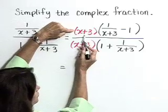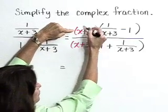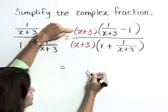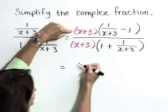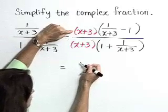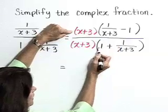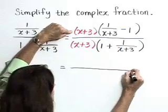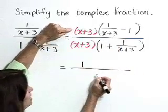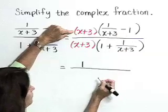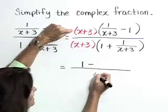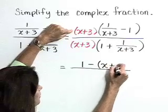Looking at the numerator, we're going to distribute this factor of x plus 3 to both terms. I'm going to do that multiplication all in one step. x plus 3 times 1 over x plus 3 is equal to 1. x plus 3 times negative 1 is equal to negative x plus 3.